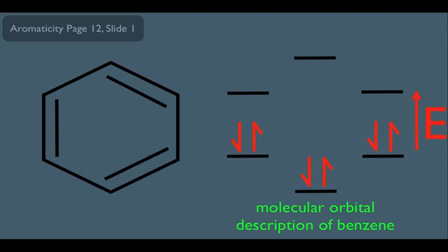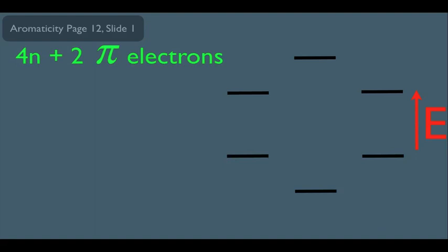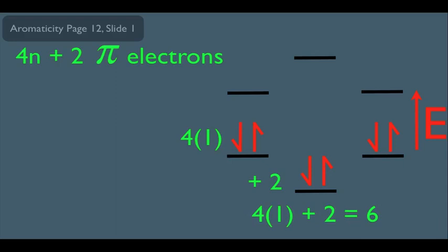Notice how this molecular orbital description matches up with what we've been learning. To be aromatic you needed an odd pair of pi electrons, and that's exactly what we have here. It also matches up with Hückel's rule — there has to be 4n+2 pi electrons for a molecule to be aromatic. In our description, this part would be the 4n and this bottom orbital would be the plus 2. For instance, if n equals 1, then 4 times 1 gives the 4 electrons here, and the plus 2 gives 2 electrons here — 4 times 1 plus 2 equals 6, confirming this is an aromatic molecule.